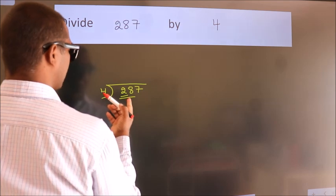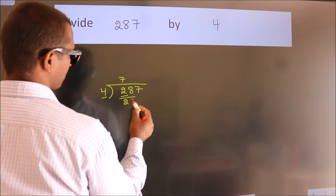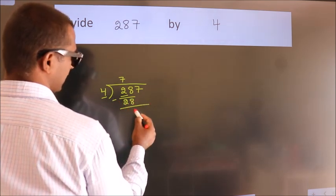When do we get 28 in 4 table? 4 times 7 is 28. Now we should subtract. We get 0.